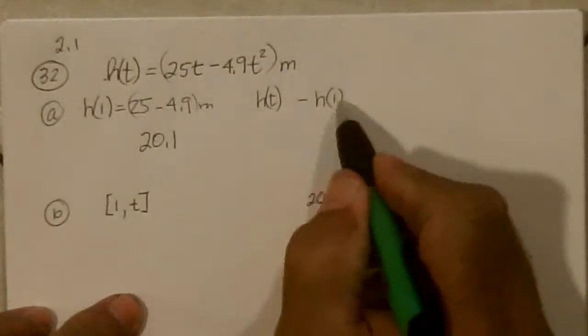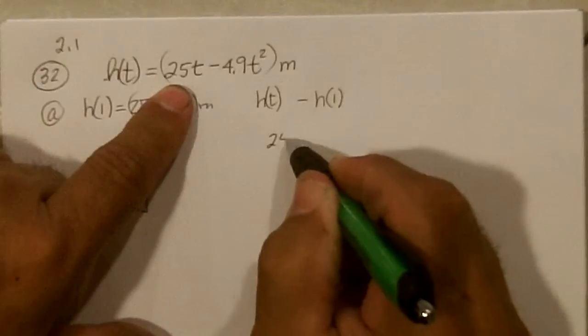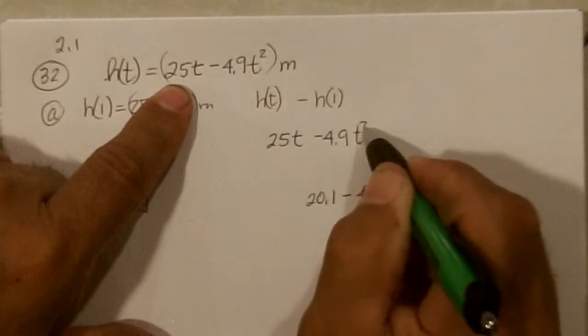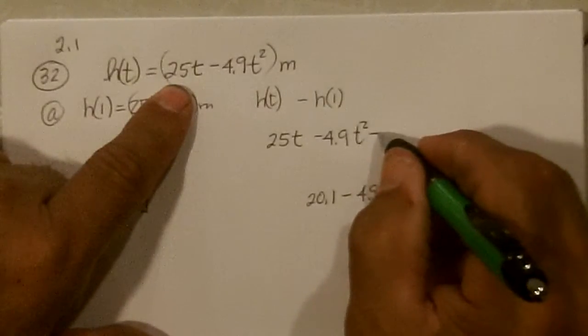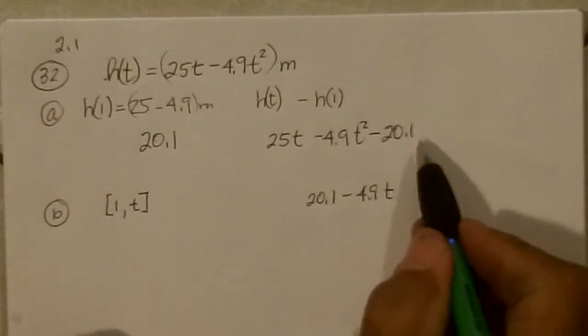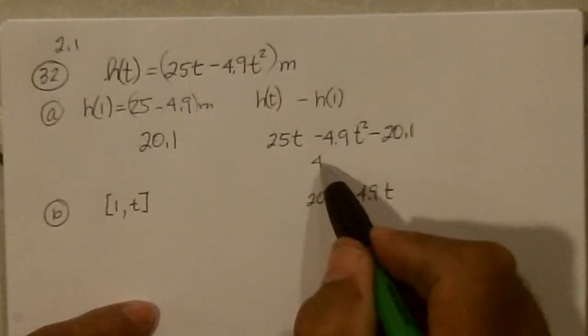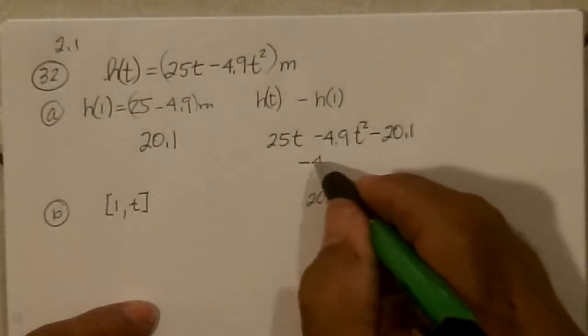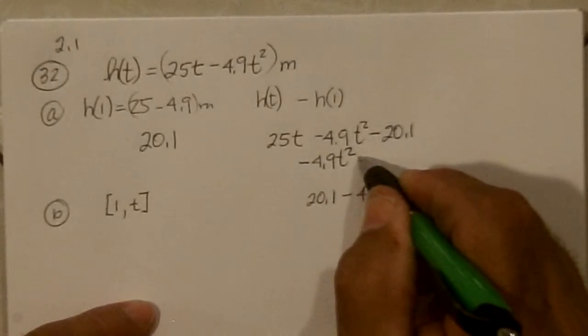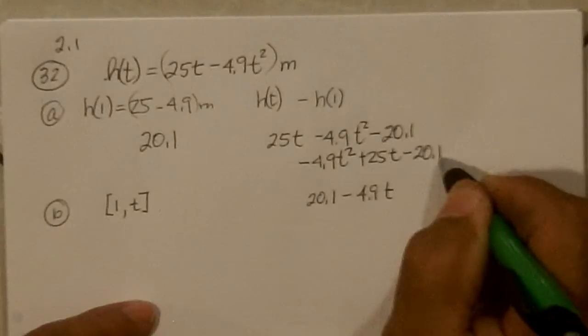Now it says show that h(t) - h(1) can be factored. So h(t) is 25t - 4.9t² minus h(1), which is 20.1. Now if we put this together, we get -4.9t² + 25t - 20.1.